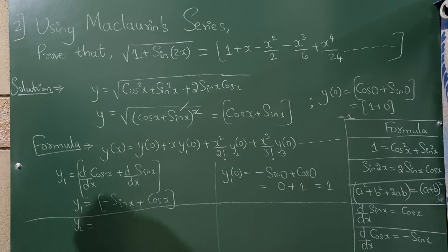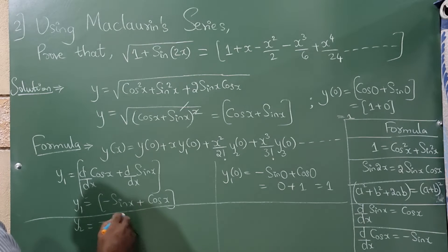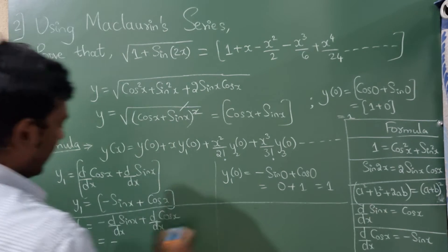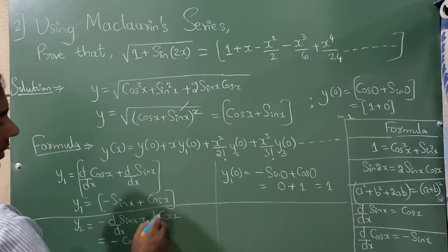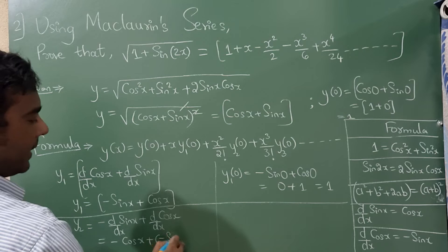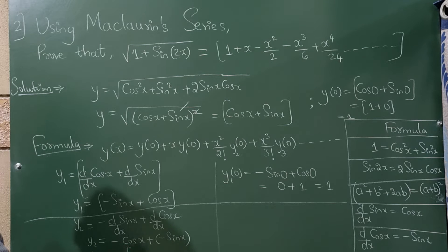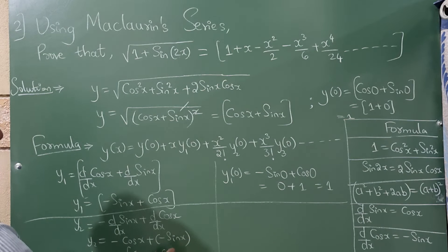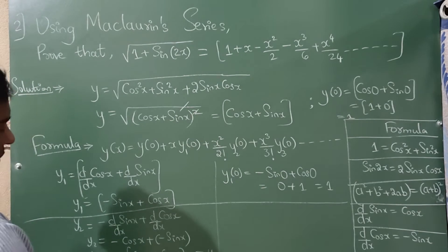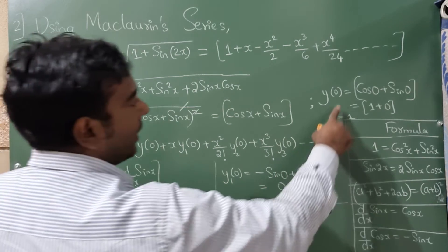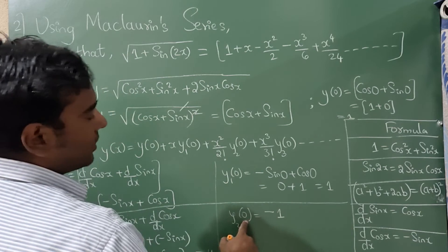Differentiating y₁, we get y₂ = −d/dx(sin x) + d/dx(cos x) = −cos x − sin x. Taking minus common, y₂ = −(cos x + sin x) = −y. Therefore y₂(0) = −y(0) = −1.